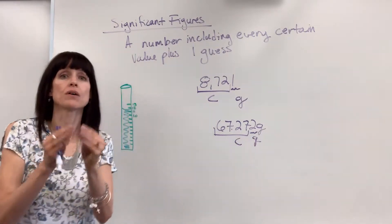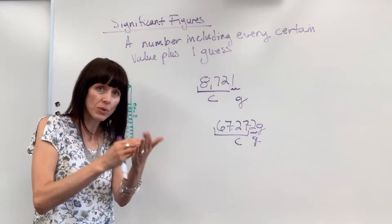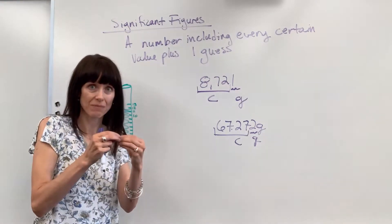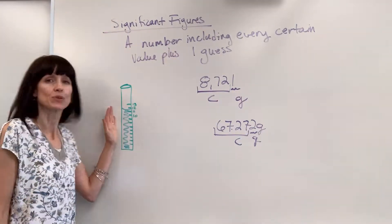When you're reading equipment, you also have to do a sig fig. You will always include every number that you know positively is there, and then you have to make one guess. Here's a great example: a graduated cylinder.